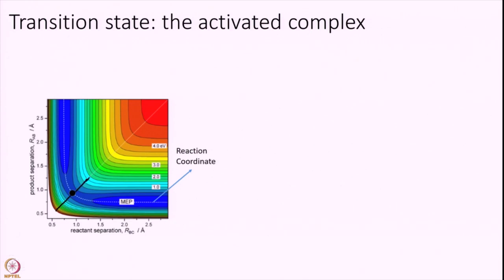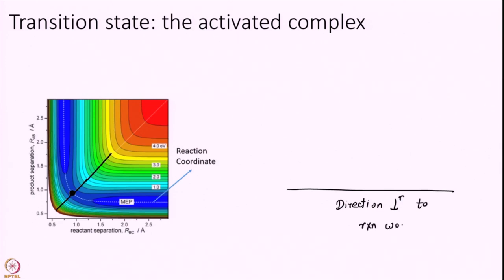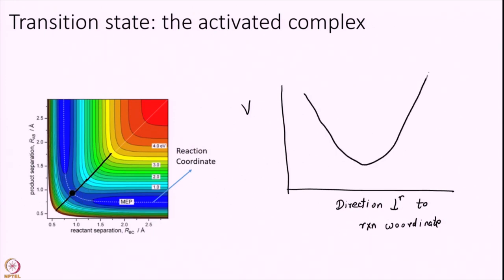Now let us also look in another direction — a direction perpendicular to my reaction coordinate. Why are we only looking at the reaction coordinate? If I draw the potential along a direction perpendicular to the reaction coordinate, you notice that the transition state here is a minimum energy point. You will get a potential that typically looks like a minimum, and this point is the transition state. This is very important to know and is critical in understanding Transition State Theory.